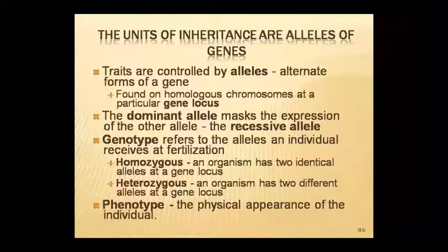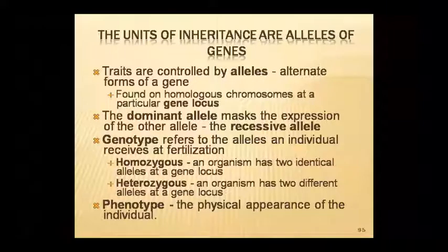Dominant alleles mask the expression of the other allele. The alleles an individual receives through fertilization make up their genotype — which can be homozygous or heterozygous. Homozygous means two identical alleles at the same gene locus. Phenotype refers to the physical appearance of an individual — whether they are tall, short, dark, or fair — that is their phenotypic character.